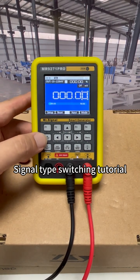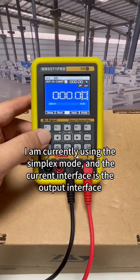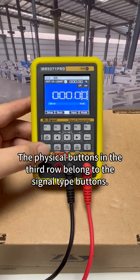Signal type switching tutorial. I am currently using the simplex mode, and the current interface is the output interface. The physical buttons in the third row belong to the signal type buttons.